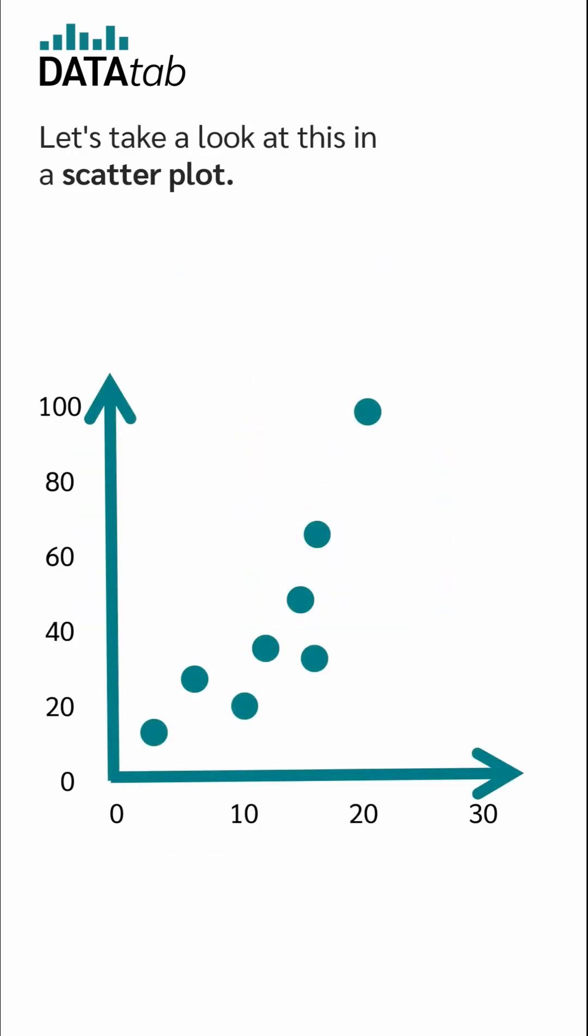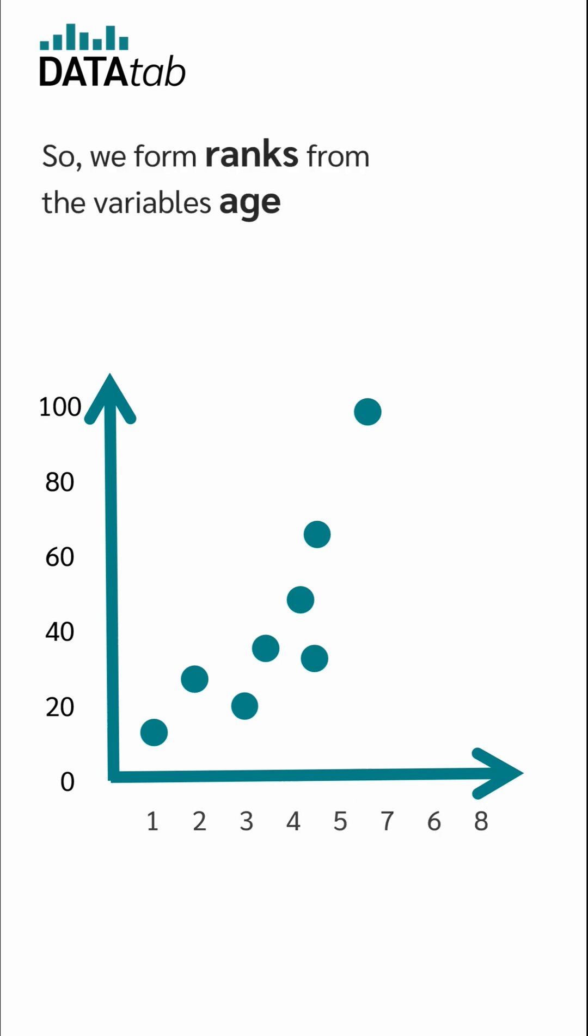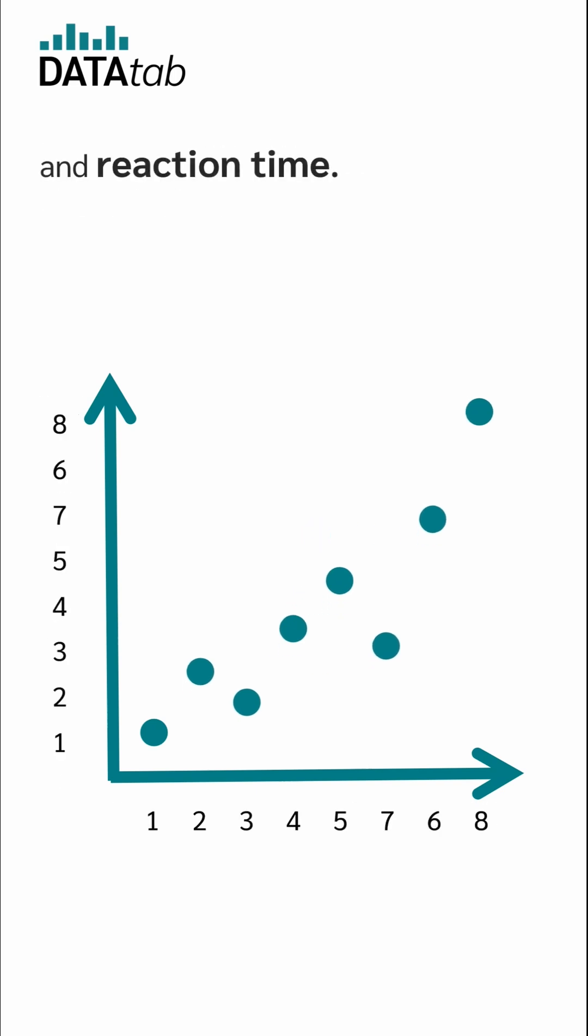Let's take a look at this in a scatter plot. Here we see the raw data of age and reaction time. But now we would like to use the rankings. So we form ranks from the variables age and reaction time.